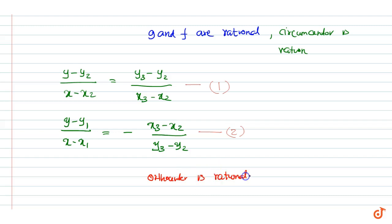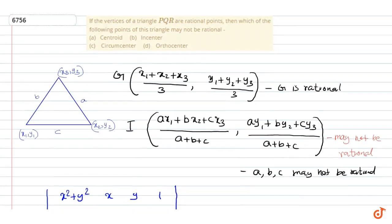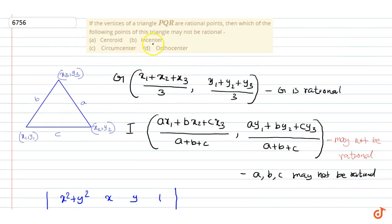Therefore, we can say that the only point of this triangle that may not be rational is the incenter. So our correct choice is option B: the incenter.